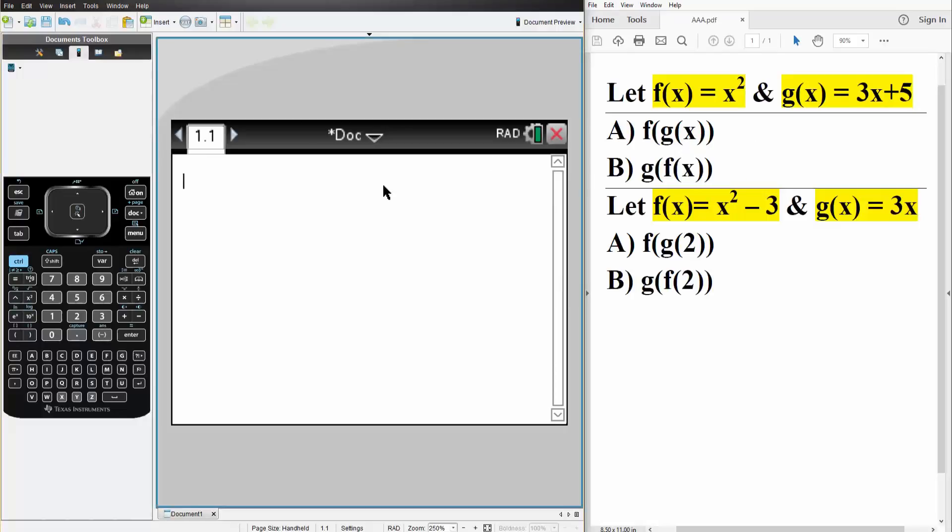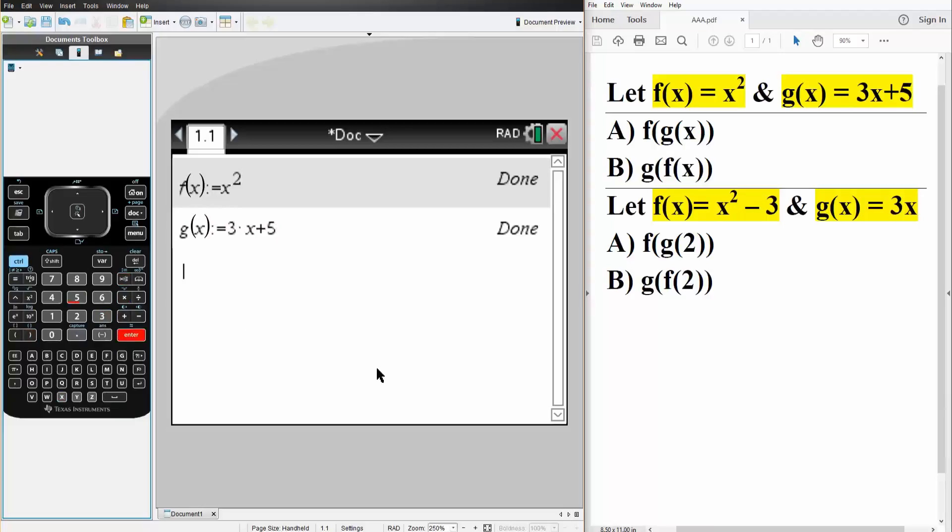In order to solve this problem, we first need to define f of x and g of x. So we say f parentheses x is defined as, so control this icon right here, and then we write x squared because f of x is x squared. So now that's defined. Next, g of x is defined as, so control this icon right here, and we have 3 times x plus 5. And so now g of x is defined.